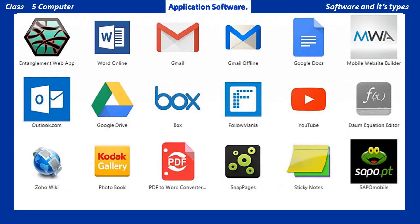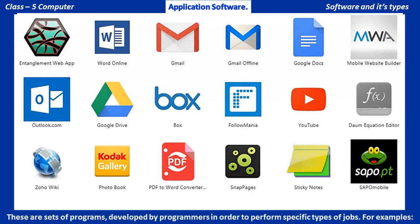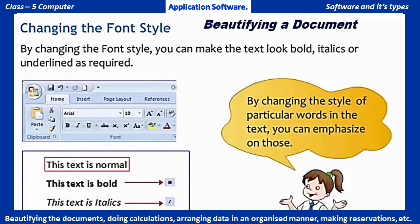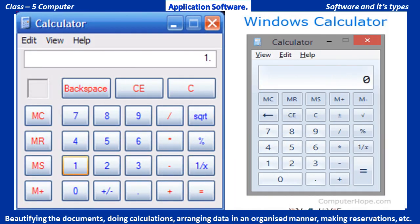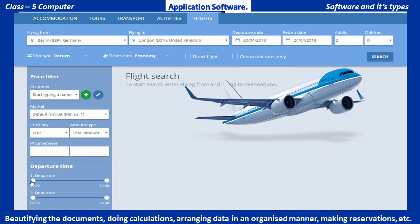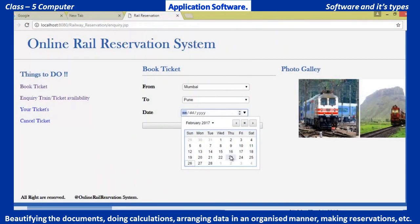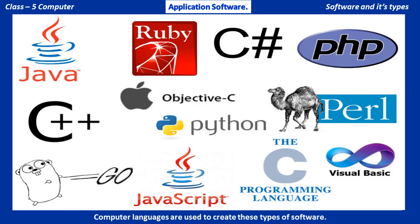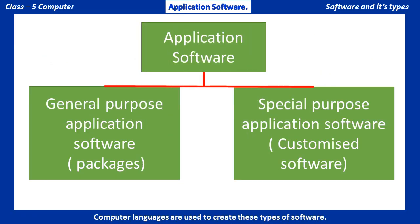Application Software: These are sets of programs developed by programmers in order to perform specific types of jobs, for example, beautifying documents, doing calculations, arranging data in an organized manner, making airline or railway reservation systems, etc. Computer languages are used to create these types of software. Application software can be further divided into two categories: General Purpose Application Software and Specific Purpose Application Software.